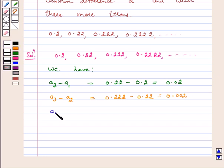Again, a4 minus a3 is equal to 0.2222 minus 0.222 which is equal to 0.0002.